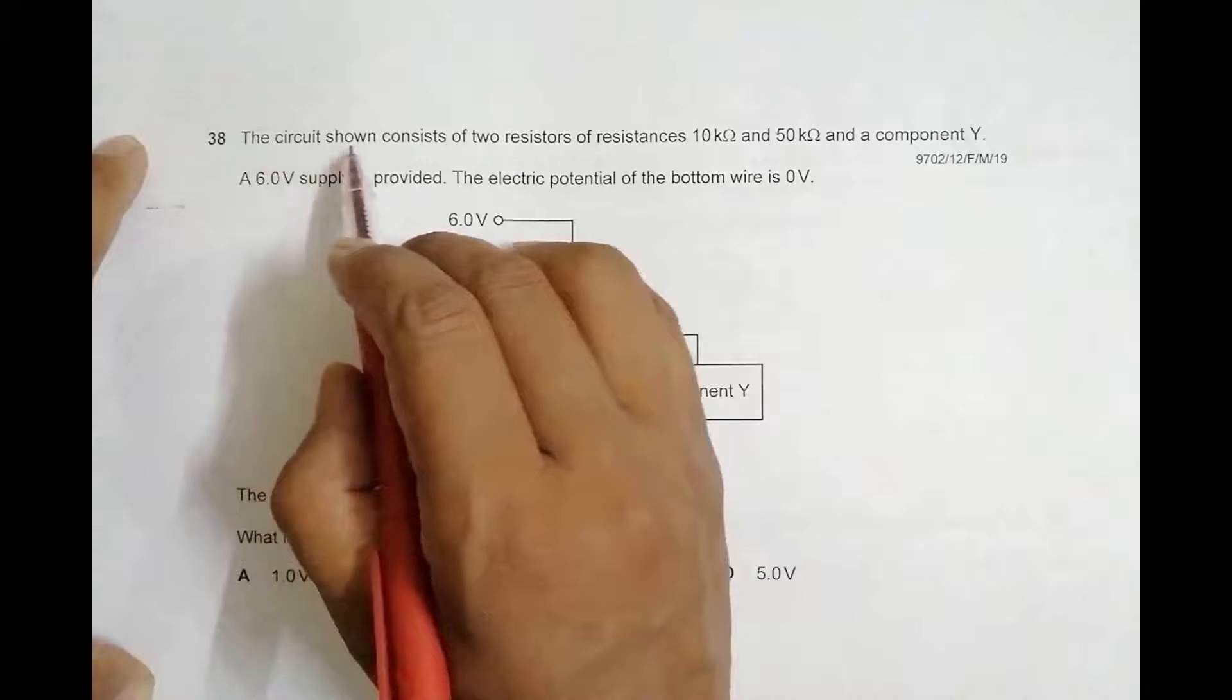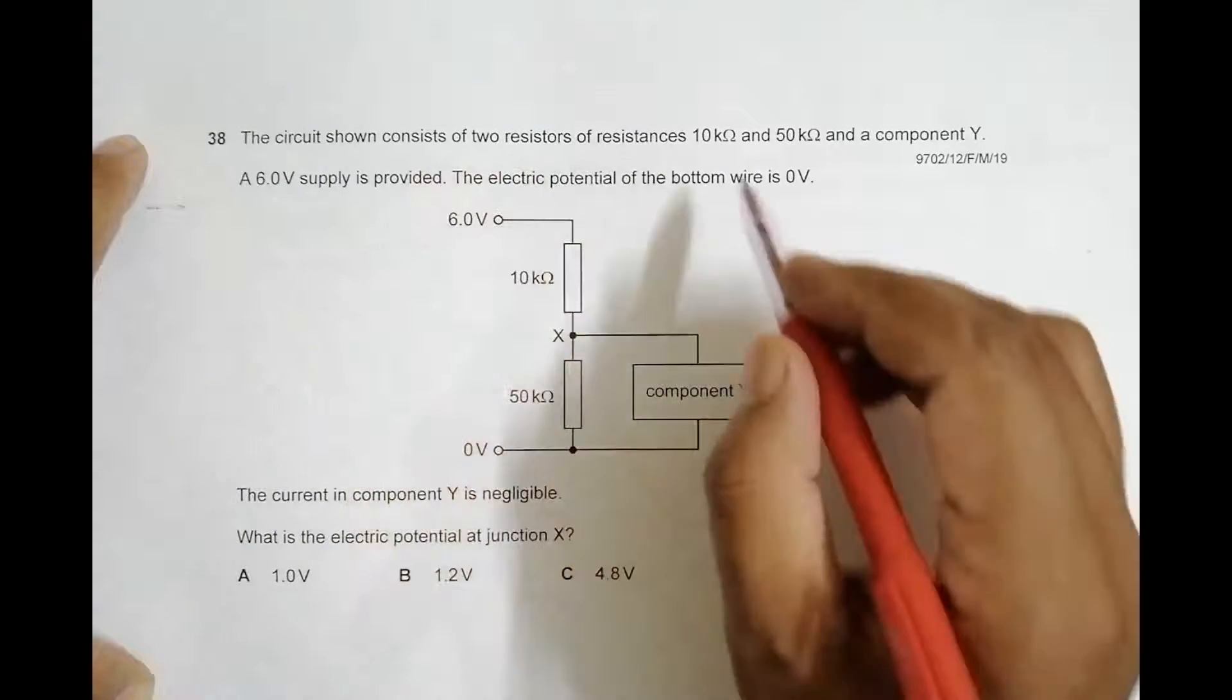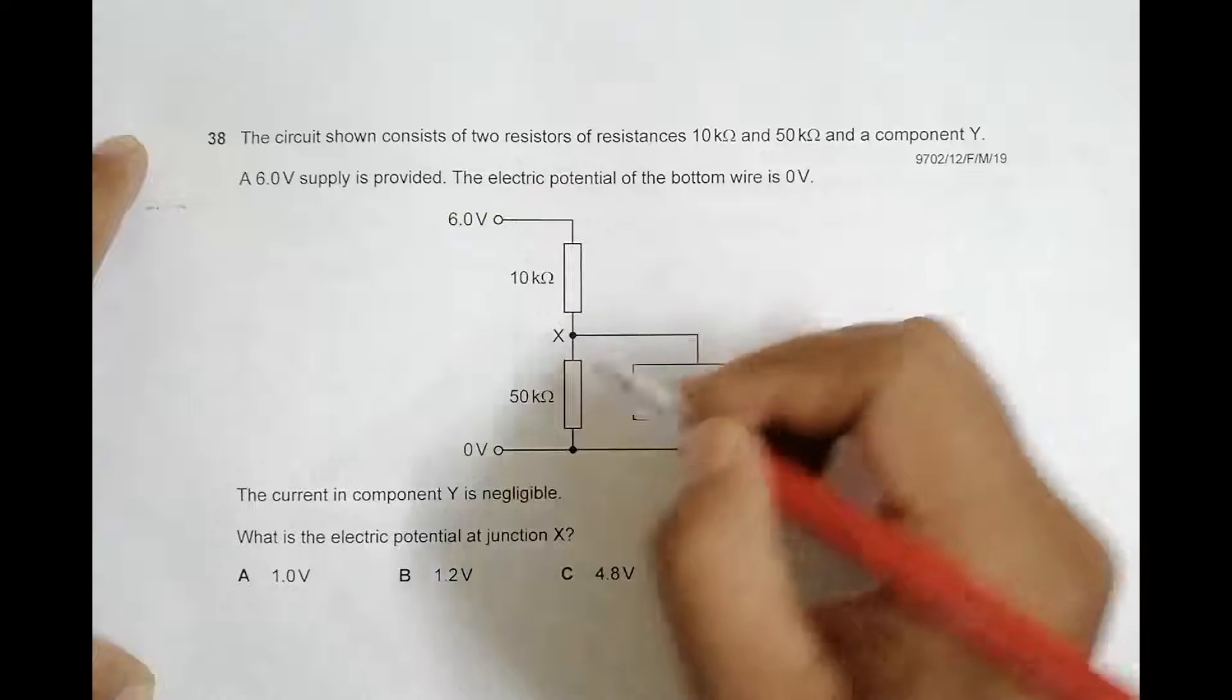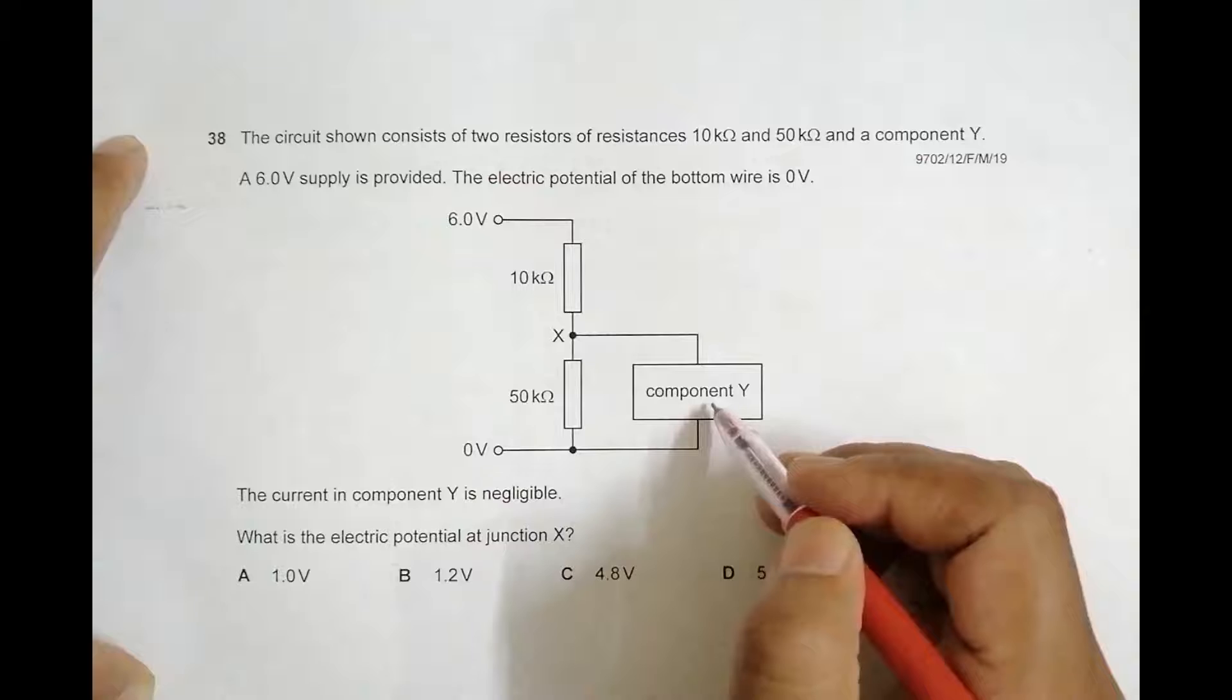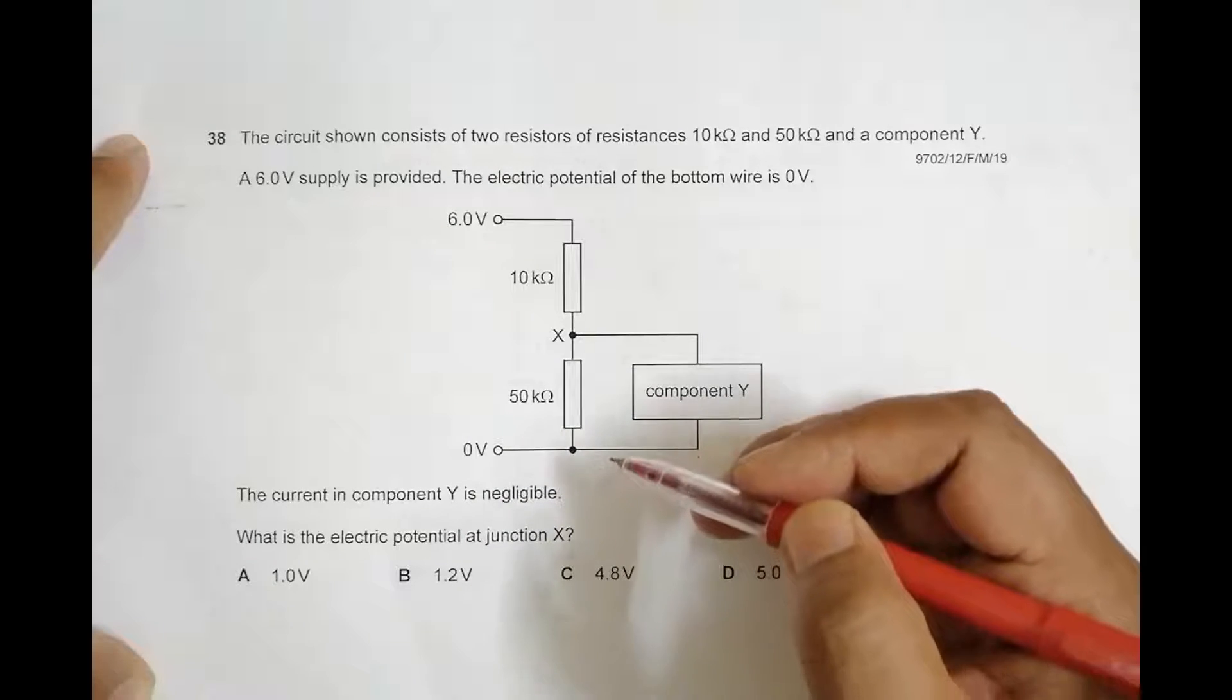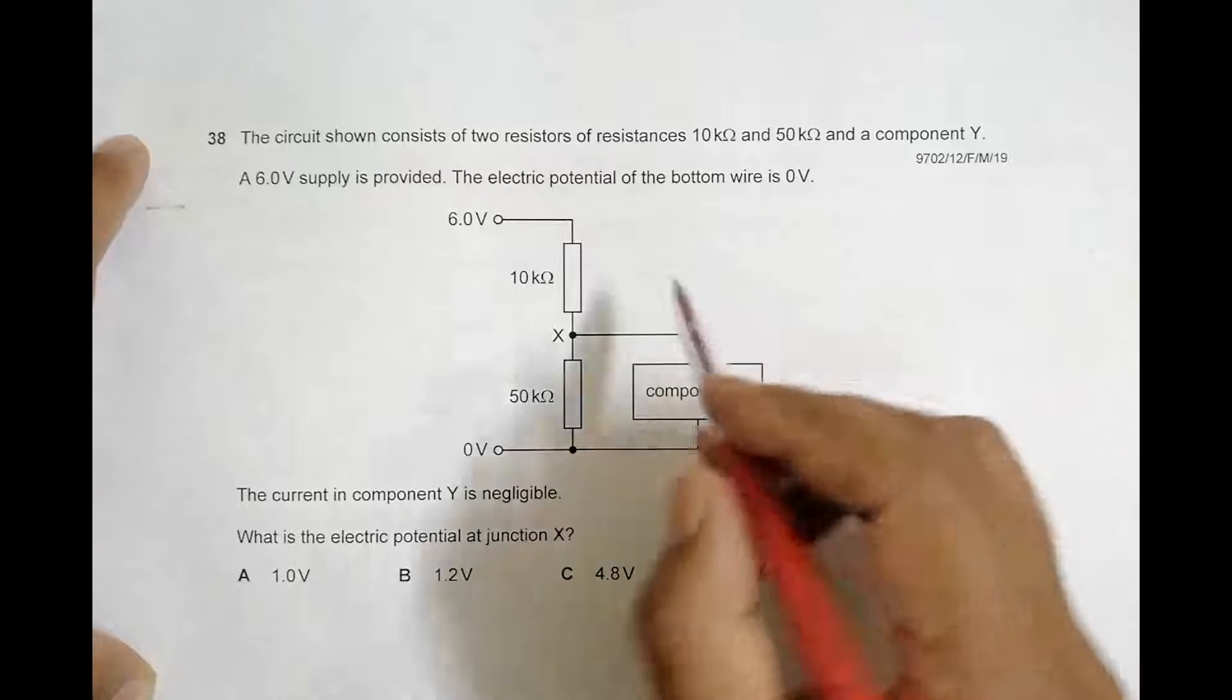This problem has a circuit shown consisting of two resistors of resistances 10 kilo-ohm and 50 kilo-ohm in series, and a component Y. This component Y is parallel to the 50 kilo-ohm resistance.